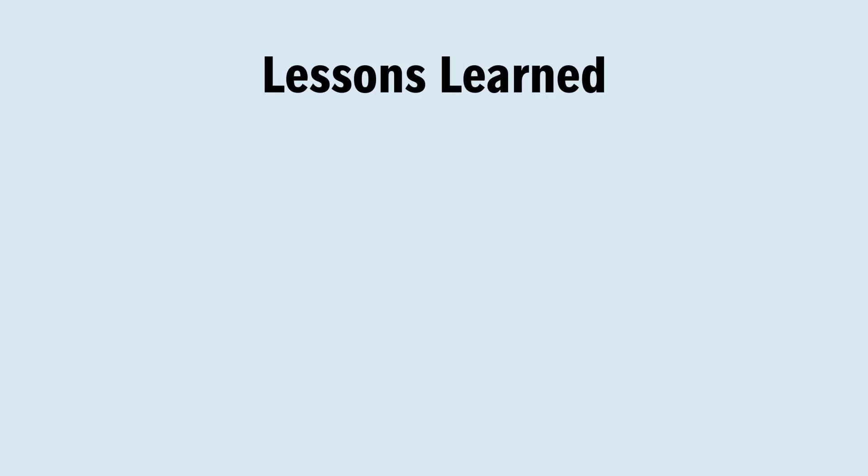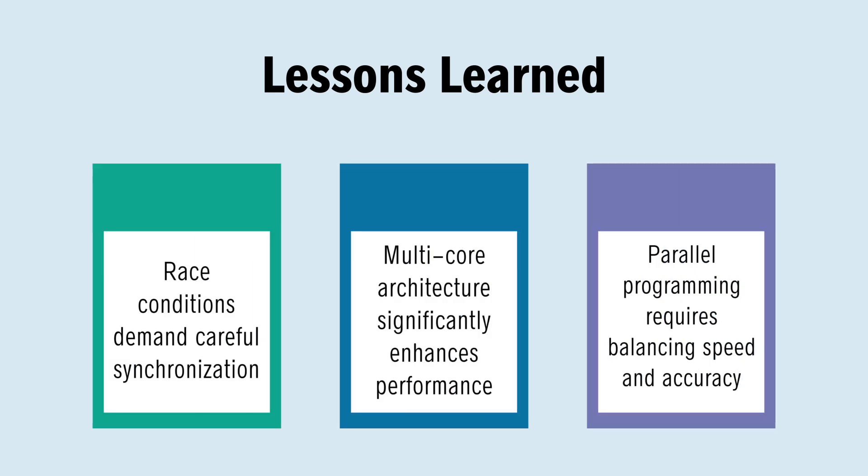This project taught us valuable lessons. First, race conditions in parallel computing require effective synchronisation techniques, like critical and atomic operations. Second, the architecture of modern multi-core processors plays a pivotal role in performance. Finally, parallel programming is a fine balance between speed and maintaining accuracy.